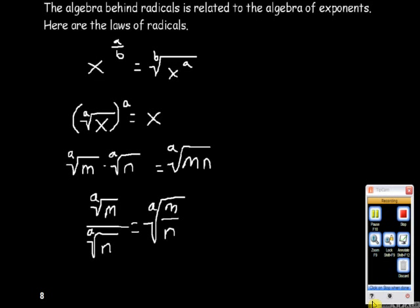The algebra behind radicals is related to the algebra of exponents. Now, remember the property: x to the a over b power is equal to the b root of x to the a power. Also remember that you can undo a radical by raising a radical to the root of the radical. So the a root of x to the a power is equal to x.